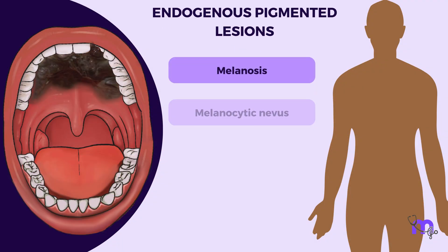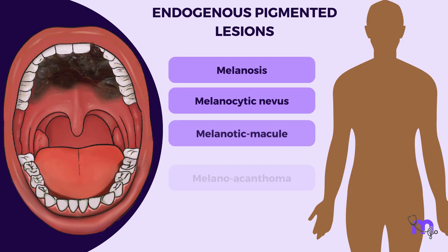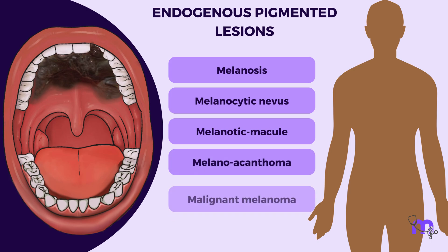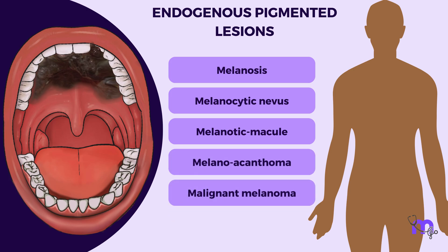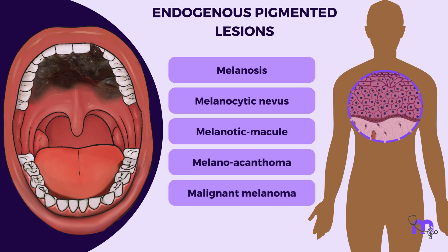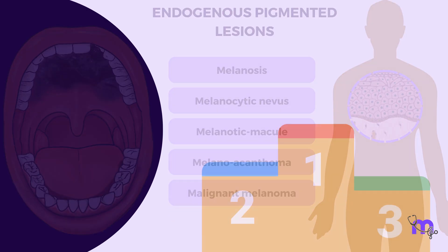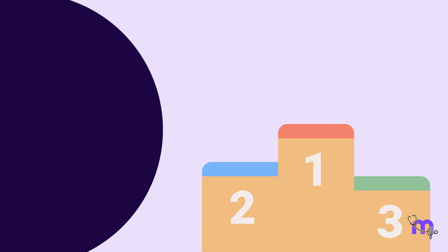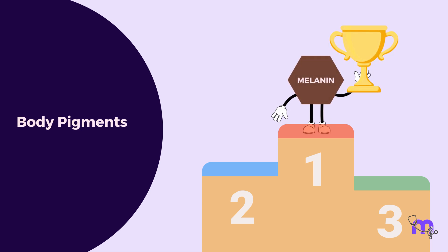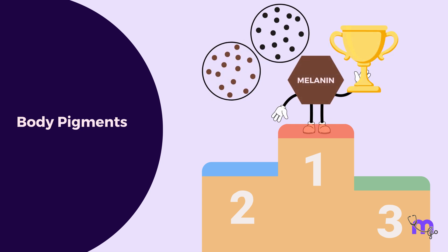Endogenous pigmented lesions are a group of abnormalities that originate within the body tissues. They are primarily caused by bodily pigments, with melanin being the main contributor to most black or brown pigmentations.